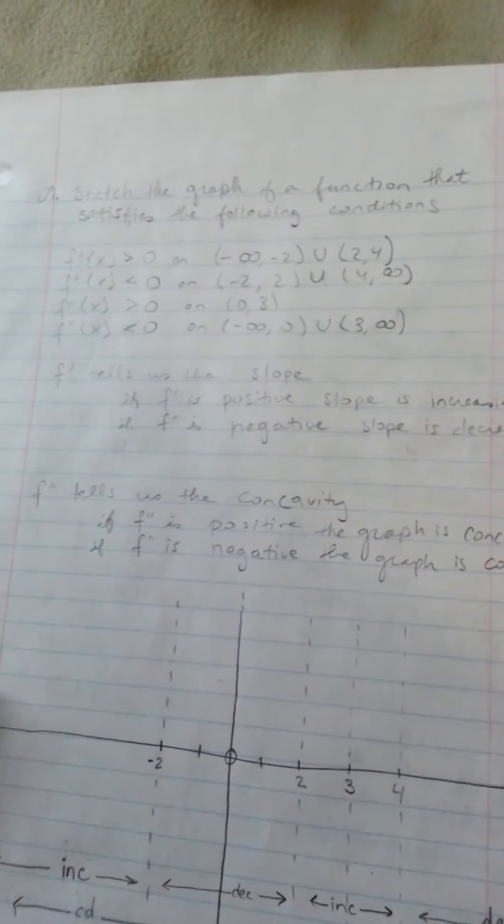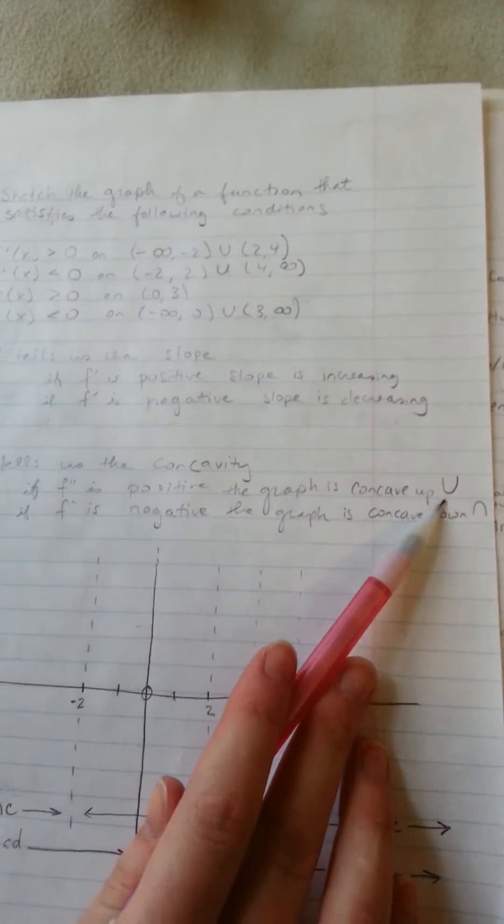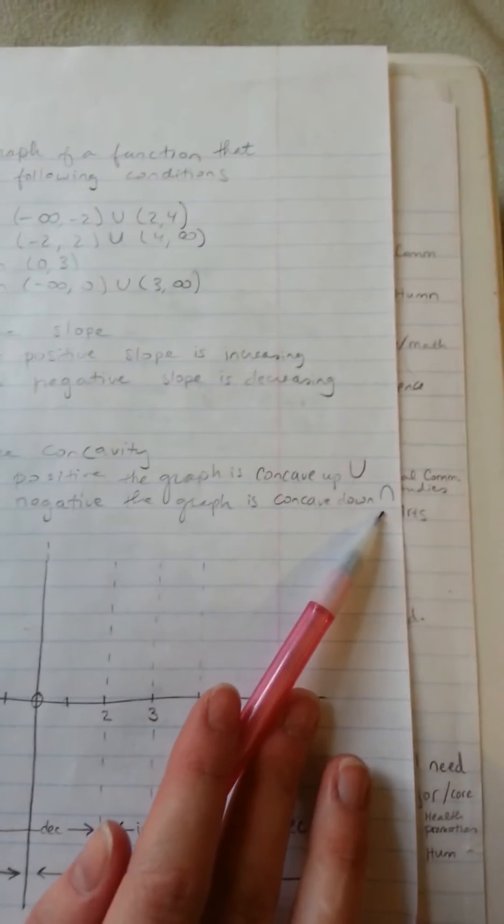f'' tells us the concavity. If f'' is positive, the graph is concave up. And if f'' is negative, the graph is concave down.